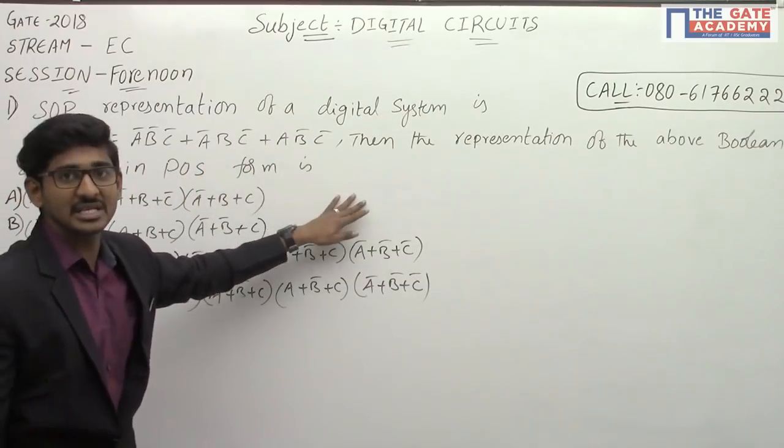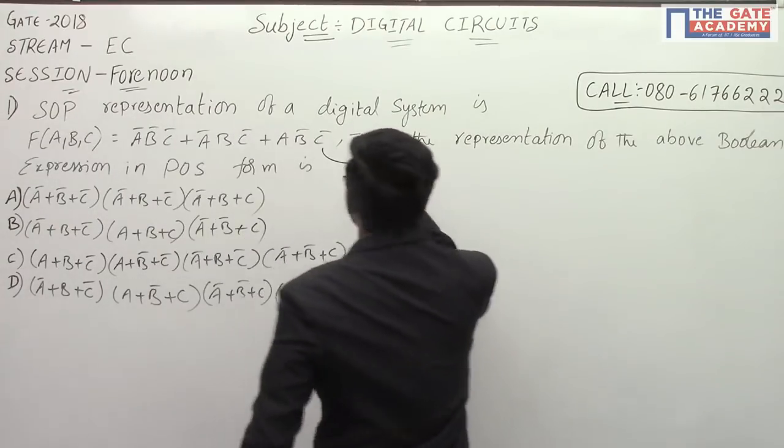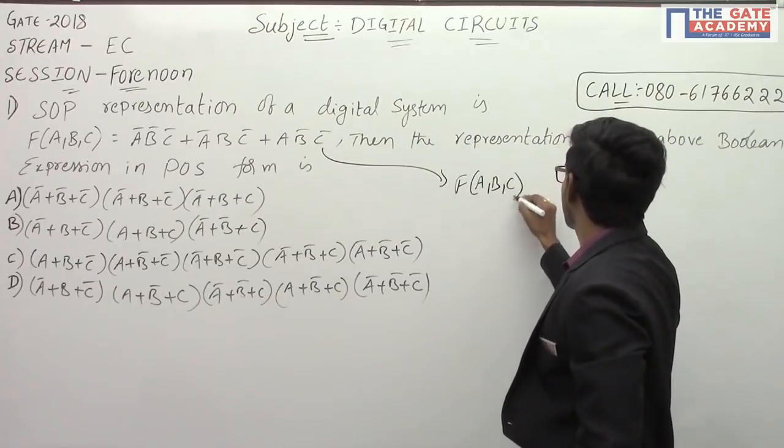Directly, no need to solve anything or simplify using K-map. We can write the answer directly. From this, we will convert into minterms.